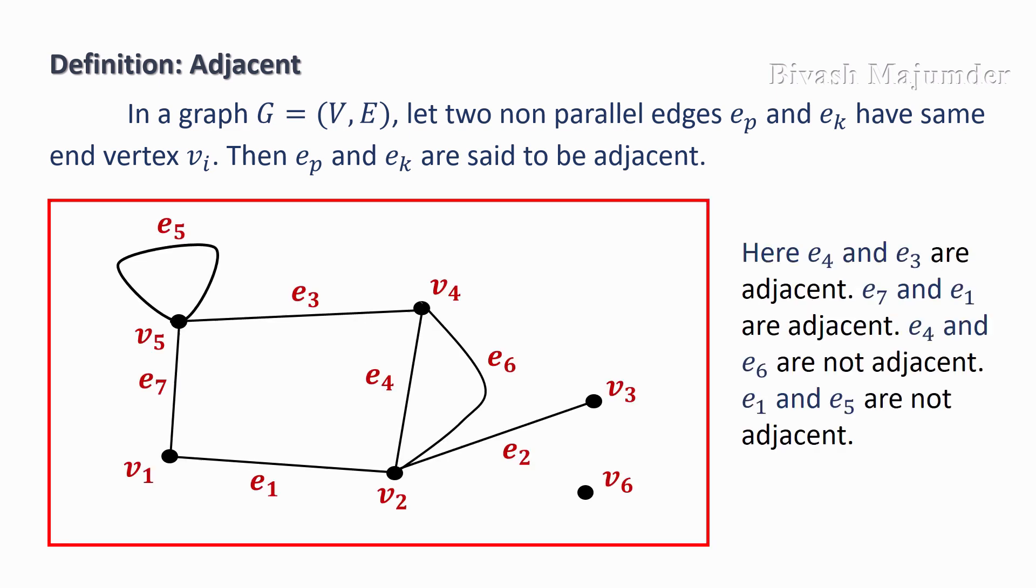In this picture, e4 and e3 are adjacent. e7 and e1 are adjacent. e4 and e6 are not adjacent. e1 and e5 are not adjacent.